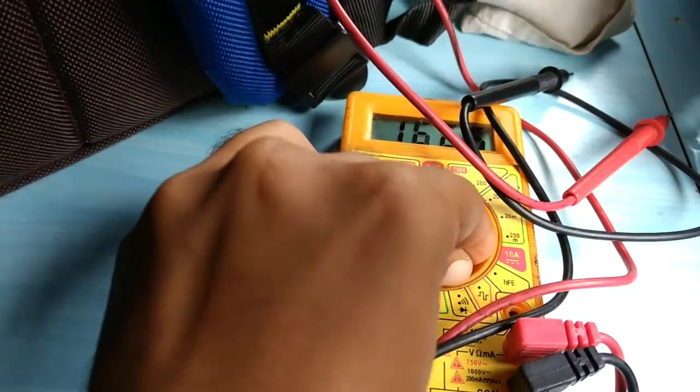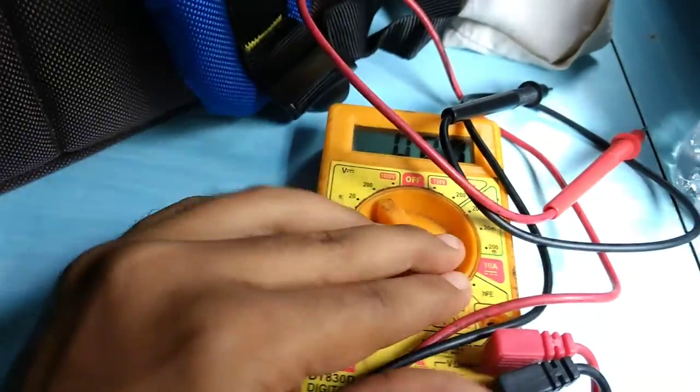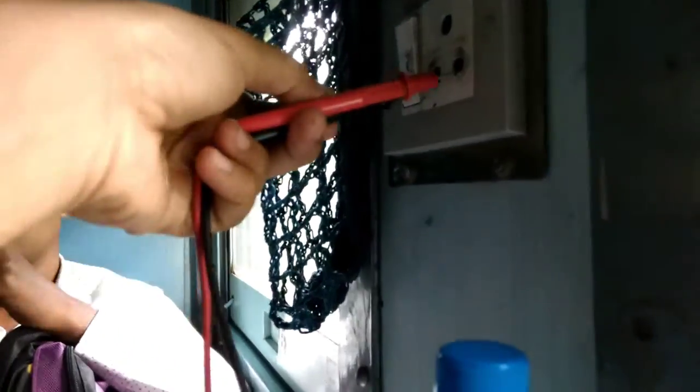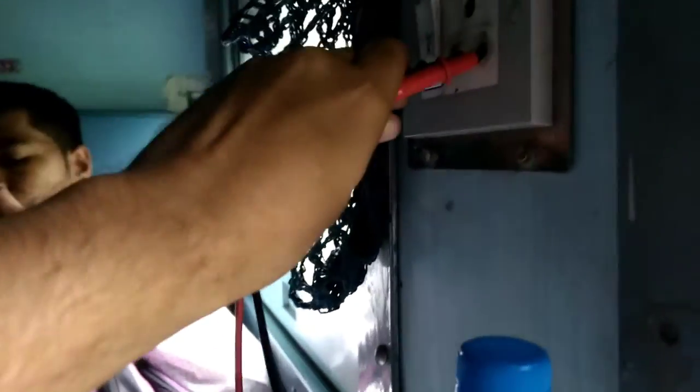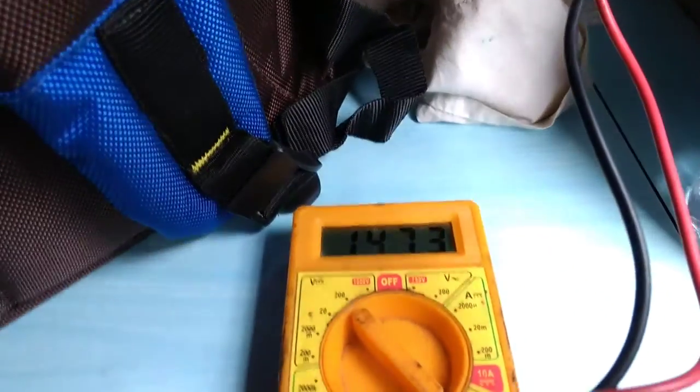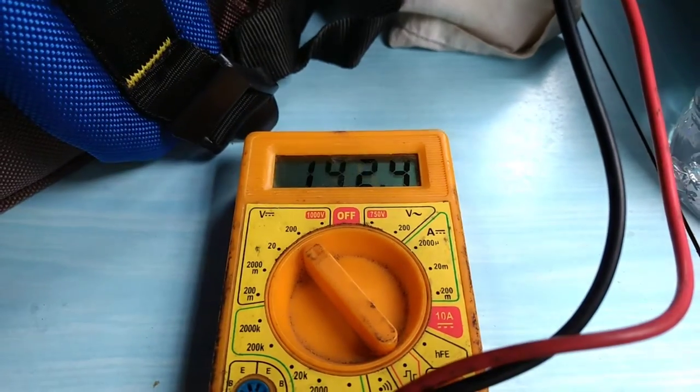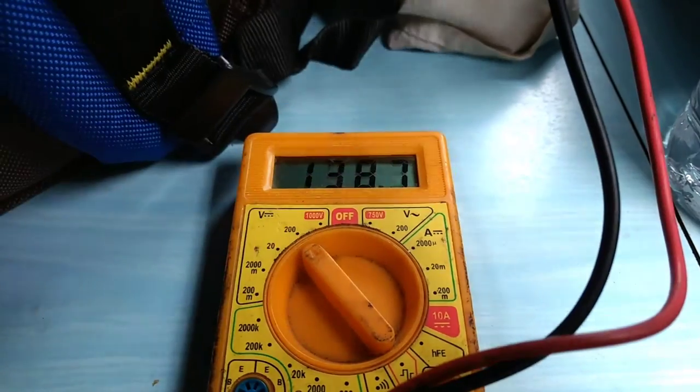Now let's just see what is the condition inside the train. Since it is mentioned that it is a DC voltage so I have turned the knob of the voltmeter to a safe limit for DC current. Now it is showing somewhere about 140, it's fluctuating but it's a DC voltage.